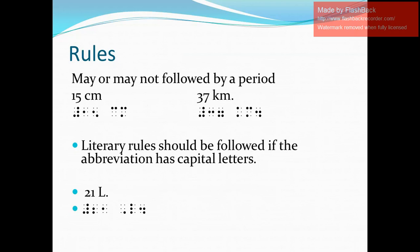Moving on to the rules that govern these abbreviations. First, these abbreviations may or may not be followed by a period. So here as an example, I have two contrasting examples. First is 15 cm without a period after cm. And then the other one is 37 km followed by a period. So in Braille, I need to write the numeric indicator — that's digits one and five for 15 — space, and then the abbreviation cm without a period. Next, for 37 km: numeric indicator, digits three and seven, space, km, and then period.